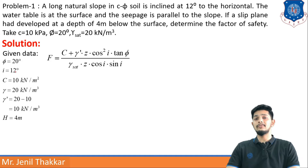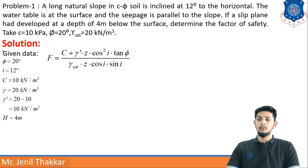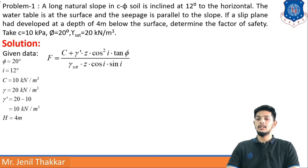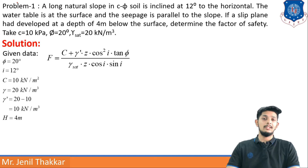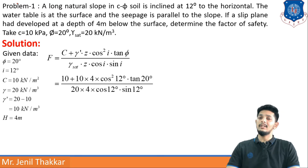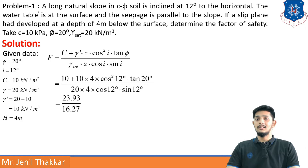Recalling the formula for c-φ soil with seepage parallel to the slope: F = (c + γ_dash × Z × cos²i × tan φ) / (γ_saturated × Z × cos i × sin i). We have c, γ_dash, γ_saturated, both angles i and φ, and Z = 4 meters. Putting these values into the equation gives a factor of safety of 1.47.